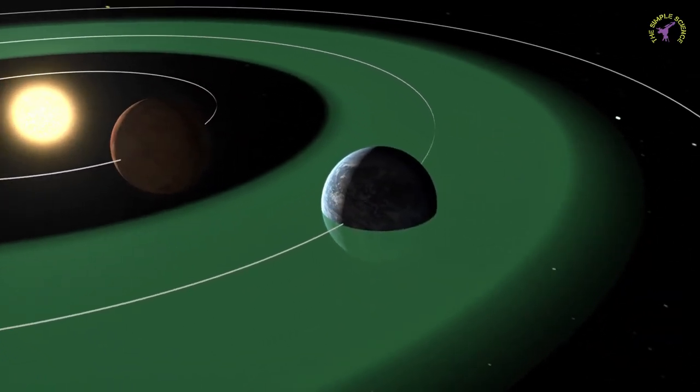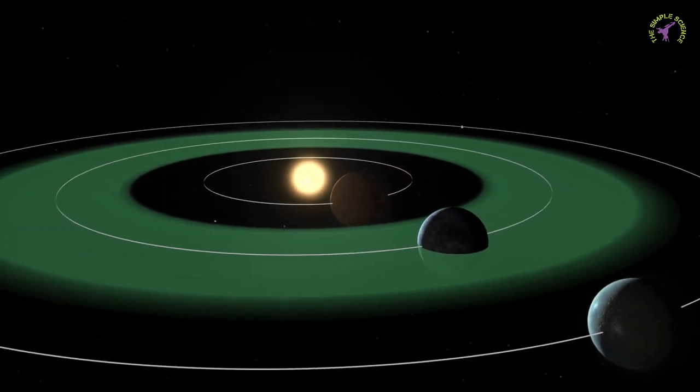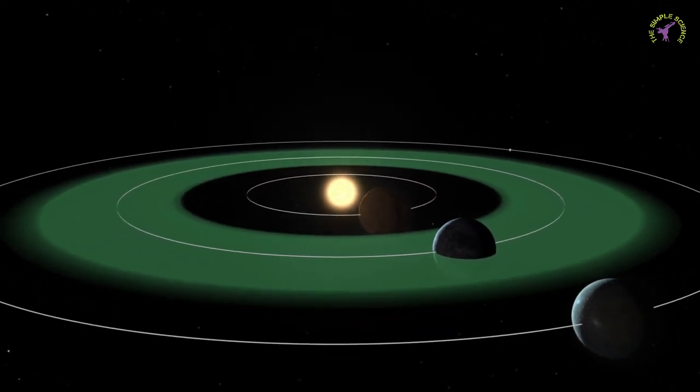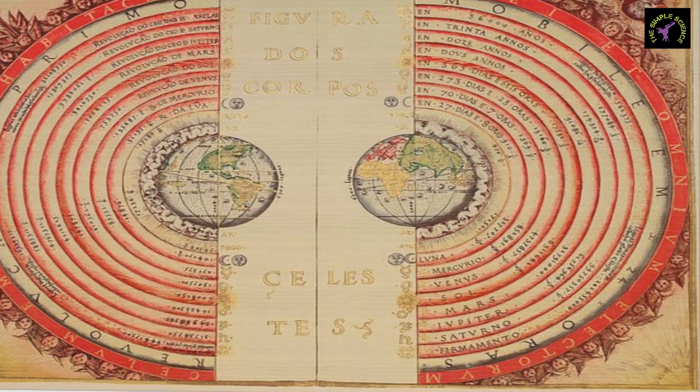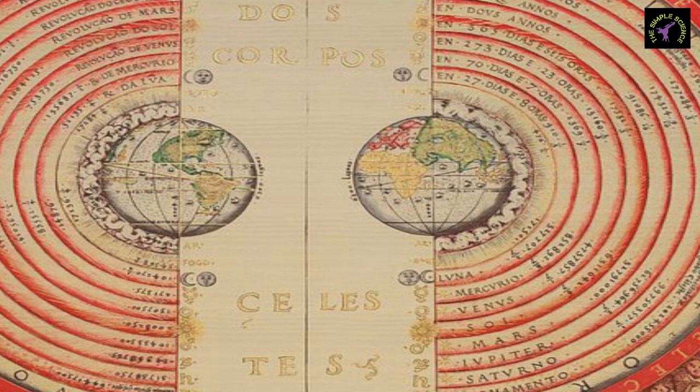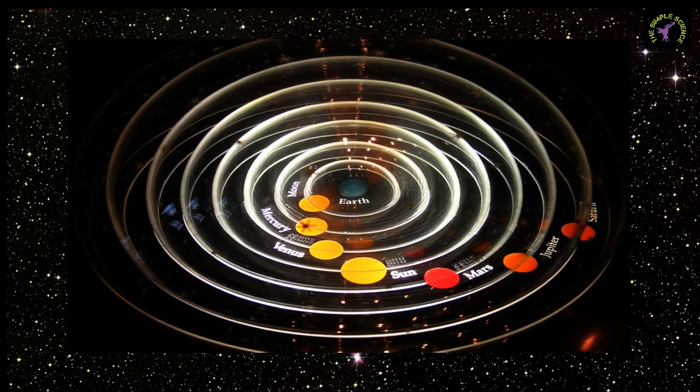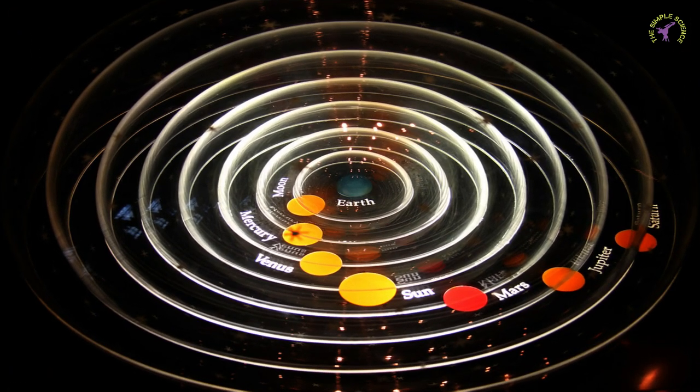This model was not universally accepted. It was adopted by the Christian Church as the picture of the universe that was in accordance with scripture, for it had the great advantage that it left lots of room outside the sphere of fixed stars for heaven and hell.